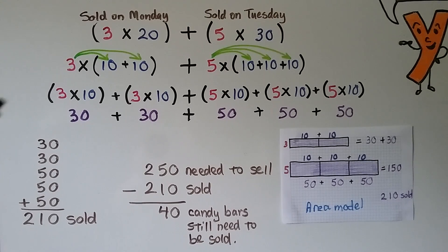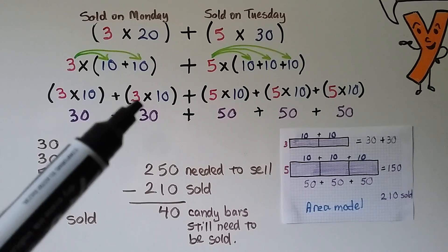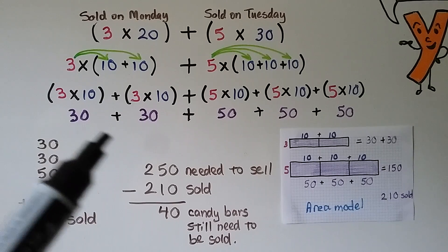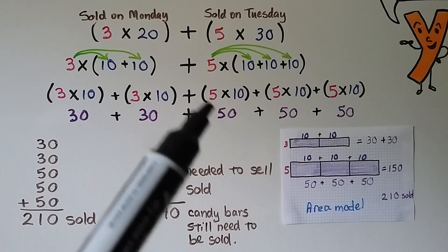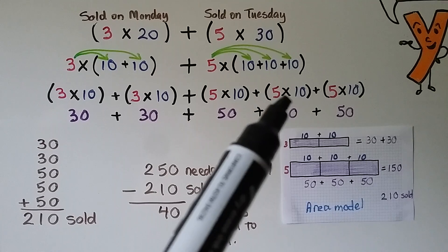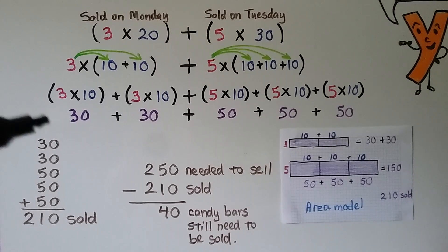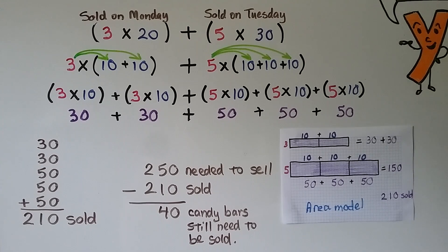We use the distributive property and break 20 into 10 plus 10: 3 times 10 plus 3 times 10 equals 30 plus 30. For the 5 times 30, we break 30 into 10 plus 10 plus 10 and distribute the 5 to each 10: 5 times 10 plus 5 times 10 plus 5 times 10 equals 50 plus 50 plus 50. We stack all the addends — 30, 30, 50, 50, and 50 — and get a total of 210 candy bars sold.